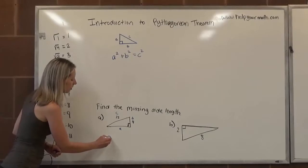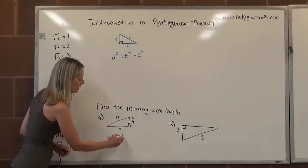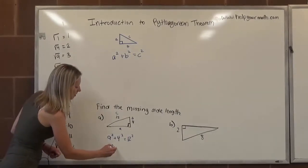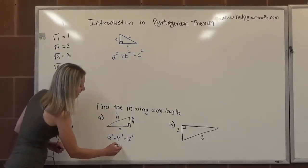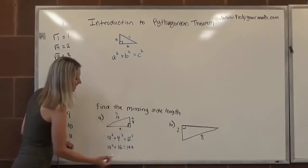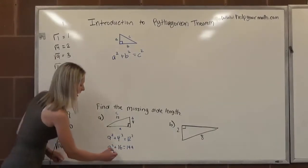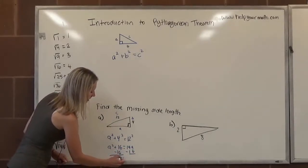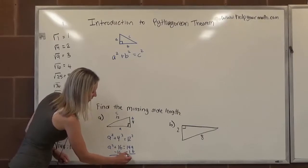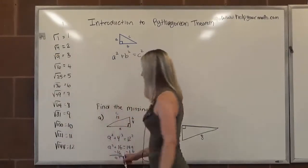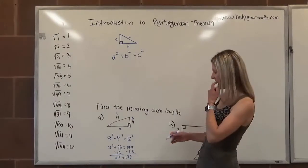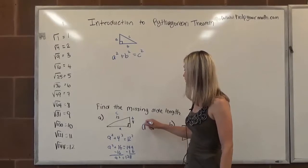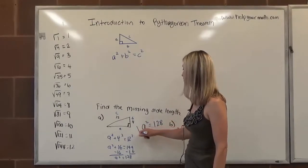Plugging into the Pythagorean theorem, we would say a squared plus 4 squared is equal to 12 squared. We're going to simplify these squares that we can. 4 squared is 16. 12 squared is 144. Then, to get a squared by itself, we'll subtract 16 from both sides. And we get a squared is equal to 128. To get a by itself, if a is being squared, how do we undo a square? That's when we take the square root of both sides. So we're going to take the square root over here. We're going to take the square root here.